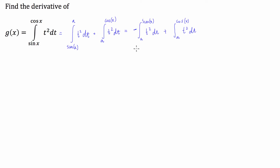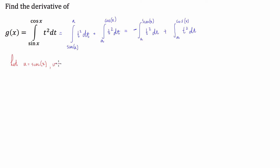Now we can see this is in the form where we can start to apply the fundamental theorem of calculus. Because we have a function in the upper bound of our integral, we're going to have to use the chain rule when we differentiate. So we replace sine of x and cosine of x with variables — let u equal sine of x and v equal cosine of x.